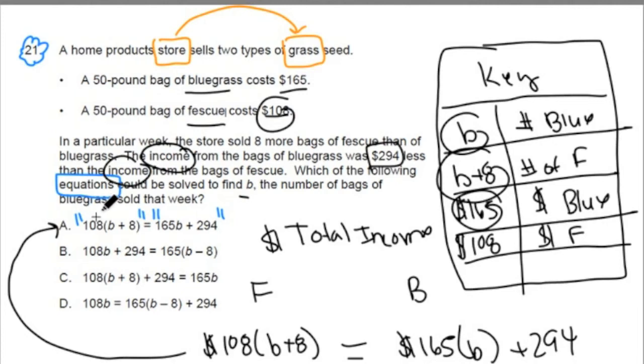This is the cost per bag of fescue. This is the number of bags of fescue. This right here represents the total income made that week from selling bags of fescue. This right here represents the total income made from selling bags of bluegrass. And this is what we'd have to add to the bluegrass total income to equal the fescue, to make these quantities equal.